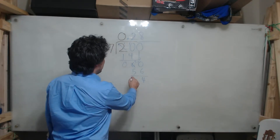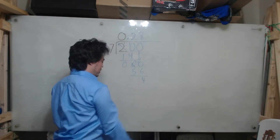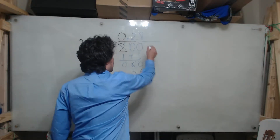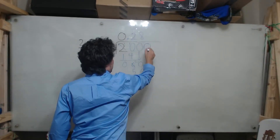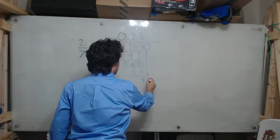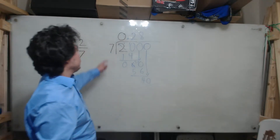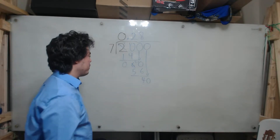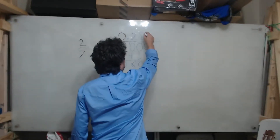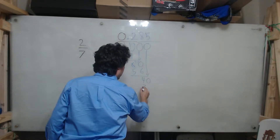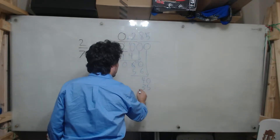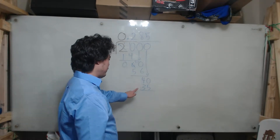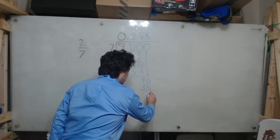10 minus 6 is 4, and 5 minus 5 is 0. Now I've done the subtraction so I can affix another 0 here. I drop this 0 down and get 40. I ask myself how many times does 7 go into 40? 7 goes into 40 five times, because 5 times 7 is 35. Then I perform the subtraction: 40 minus 35 is 5.